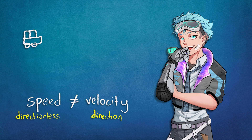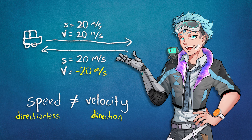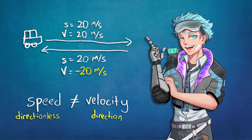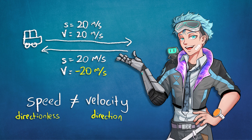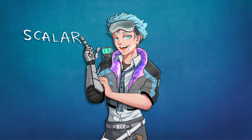Velocity takes into account the direction of movement, and speed doesn't. A car with a velocity of 20 meters per second that turns around would then have a velocity of minus 20 meters per second. Its speed, however, would remain 20 meters per second. Speed, like your speedometer, doesn't care where you're going — only how fast — so there's usually no point in having a negative value. We refer to quantities like these as scalar, and the quantities that are dependent on direction, like velocity, as vector.